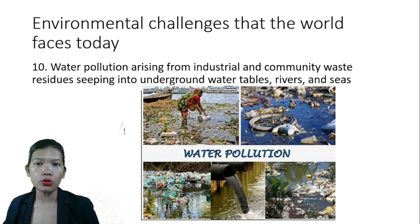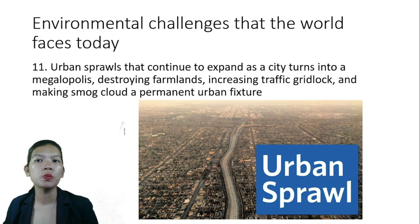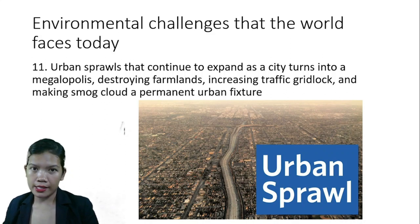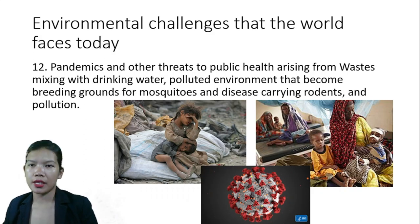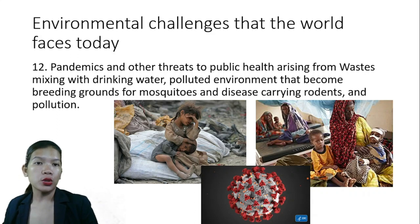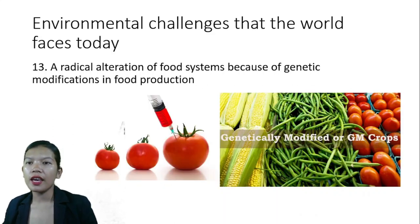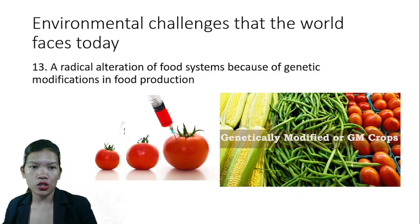Tenth is water pollution arising from industrial and community waste seeping into groundwater tables, rivers, and streams. Eleventh is urban sprawl that continues to expand as cities turn into megalopolises, destroying farmlands, increasing traffic gridlock, and making smog a permanent urban feature. Twelfth are pandemics and threats to public health arising from waste mixing with drinking water, and polluted environments becoming breeding grounds for mosquitoes, disease-carrying rodents, and pollution.